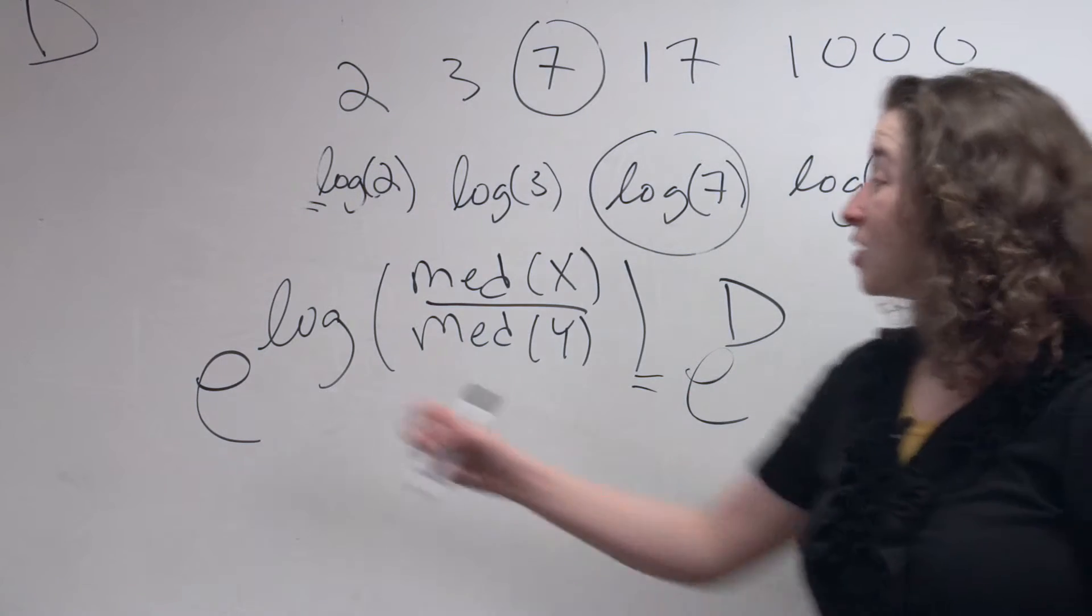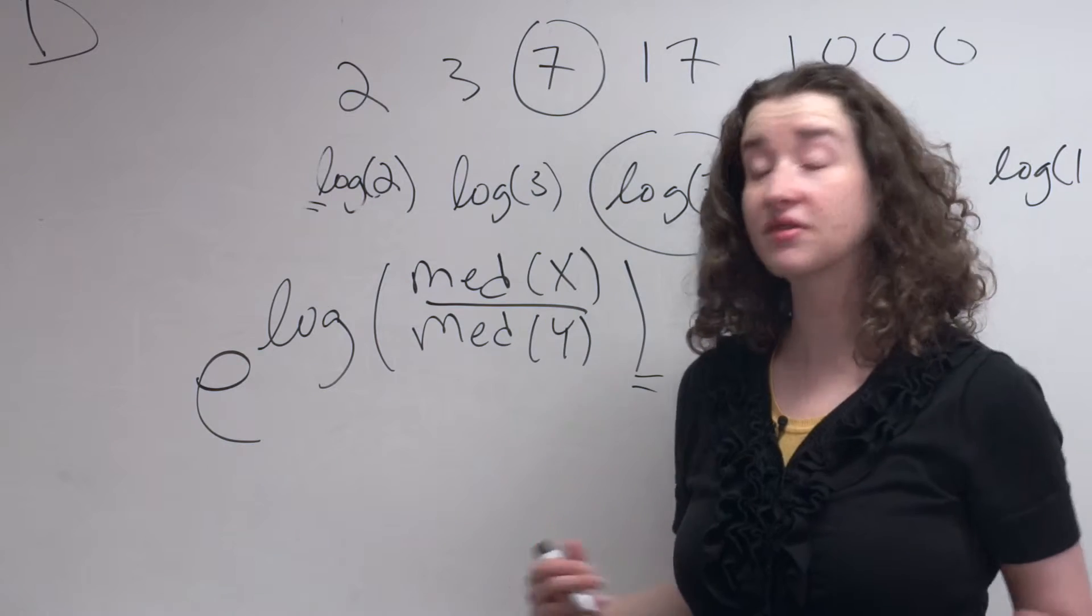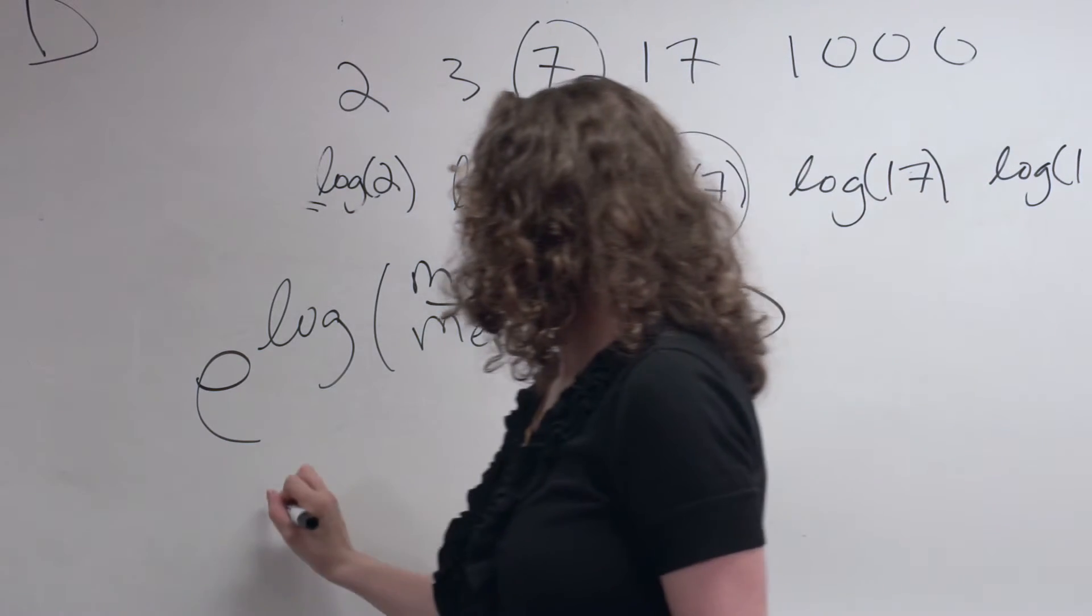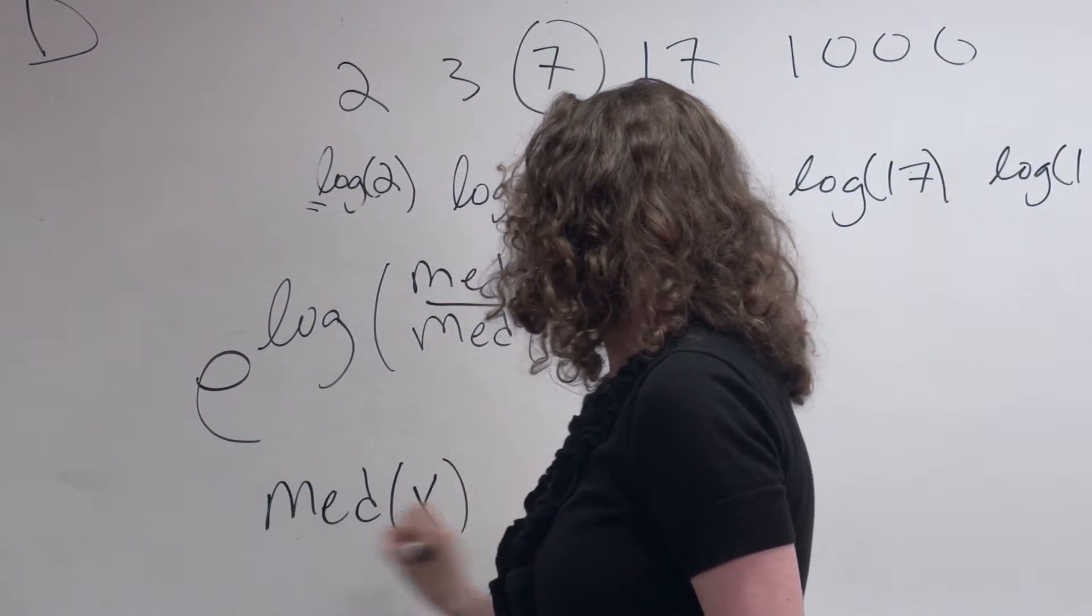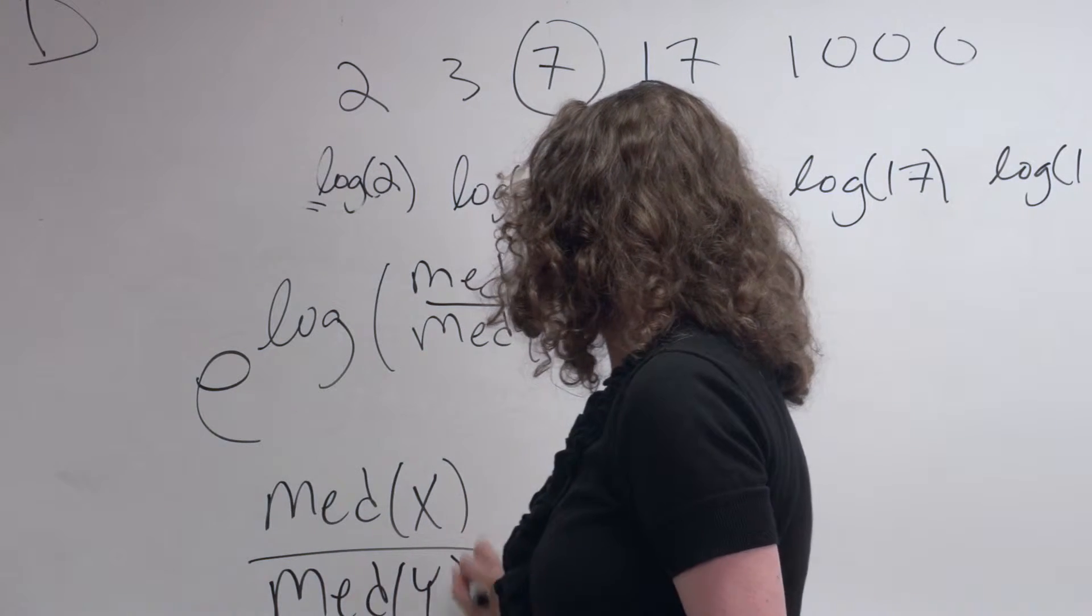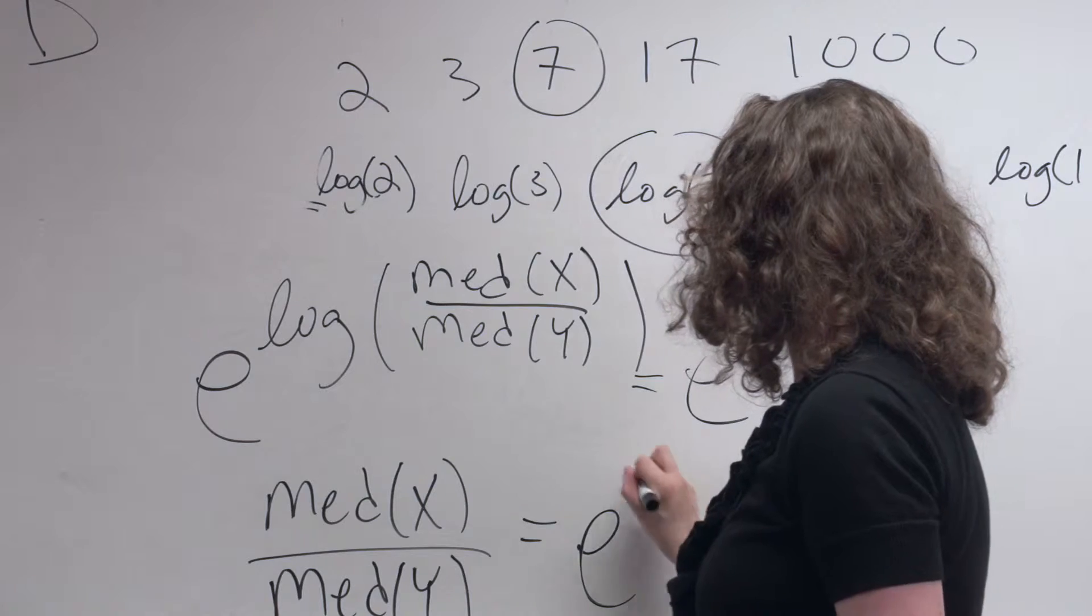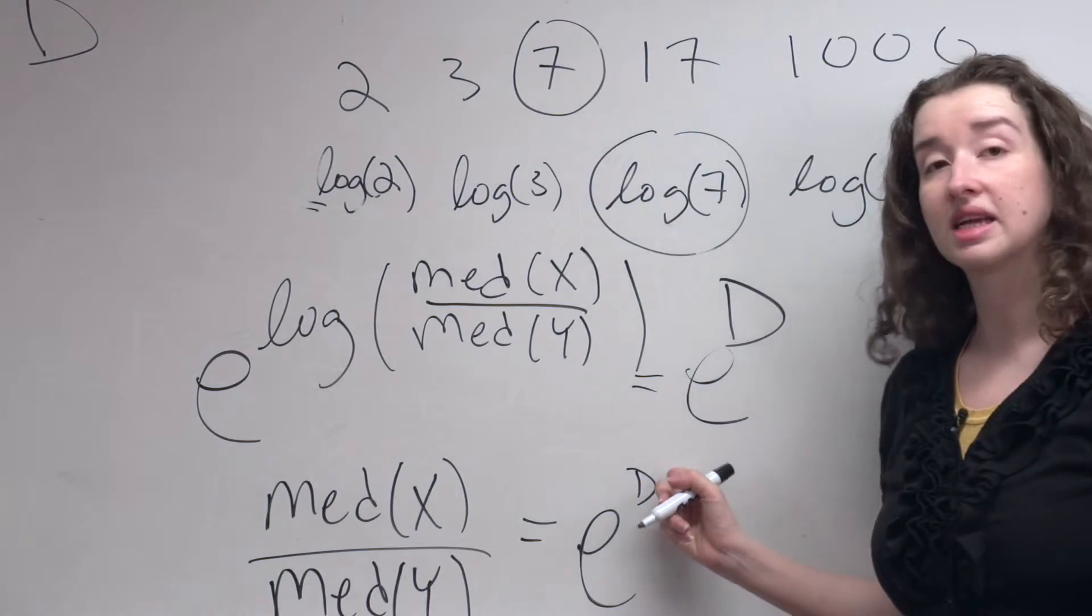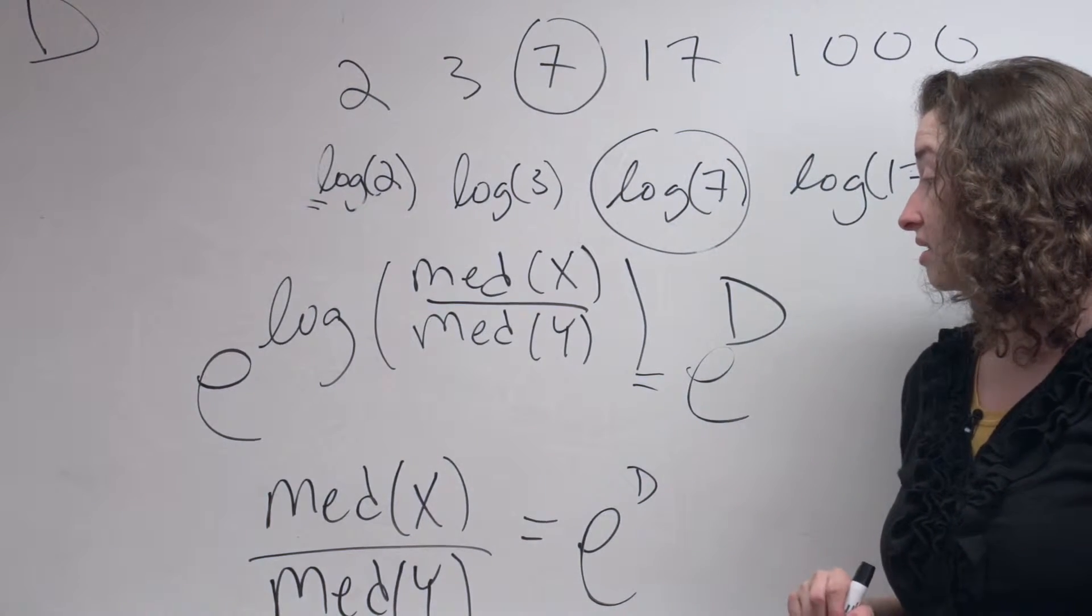What does that imply? Well, the e and the log cancel out because of the definition of log. So what this says now is that the median of the incomes in the Midwest divided by the median of the incomes in the Northeast is equal to e to the whatever quantity you calculated as the difference in means on the log scale.